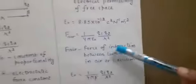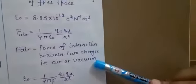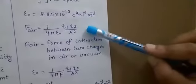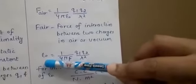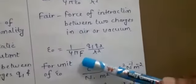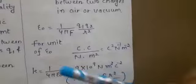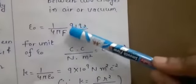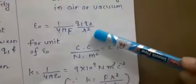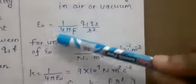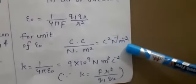F_air is the force of interaction between two charges in air or vacuum. To find the unit of epsilon 0 from this formula, rearranging gives epsilon 0 = (1/4π) × Q1 Q2 / (F × R²). Here Q is a charge with unit Coulomb, F is force in Newton, R is distance in metre, so R² is metre square, and 1 by 4 pi is a constant with no unit. So the unit of epsilon 0 comes out to be Coulomb square per Newton per metre square.